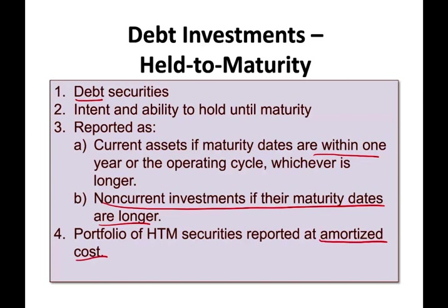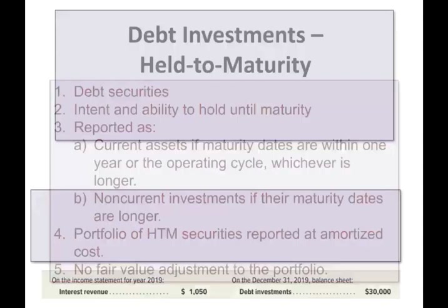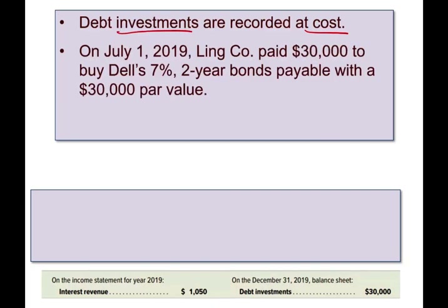What is amortized cost? If you remember when we looked at bonds, we amortized the bond — same concept. What's important about held-to-maturity is there is no fair value adjustment. We don't have to worry whether the bond went up or down in value, because we're holding it until it matures, so we don't have to worry about those fluctuations. Initially, when we buy the bond, it is recorded at cost — all investments are recorded initially at cost.